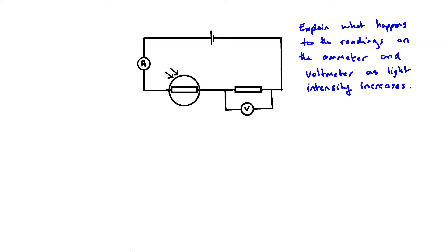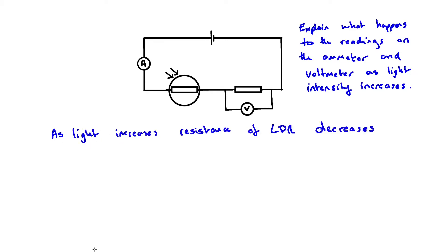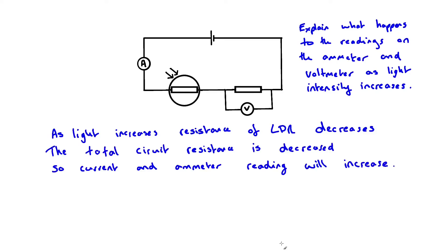Here we have an example question involving a potential divider: explain what happens to the reading on the ammeter and voltmeter as the light intensity increases. We have a light dependent resistor, an LDR. As light intensity increases, the resistance of the LDR decreases. The LDR is in series with a fixed resistor, so if the LDR resistance decreases, the overall circuit resistance decreases.